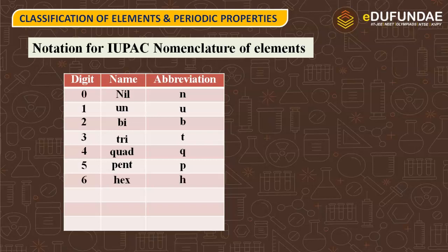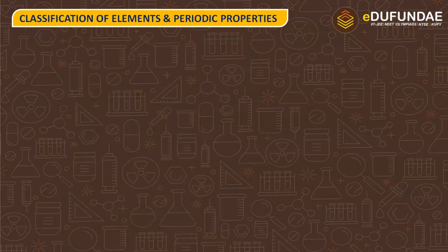For digit 5 it is pent with abbreviation p; for digit 6 the name is hex and symbol h; for 7 the name is sept, symbol s; for 8 the name is oct, abbreviation o; and for 9 the name is enn and abbreviation is e.